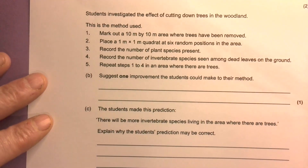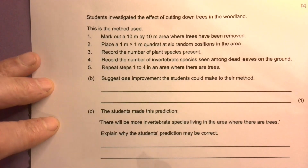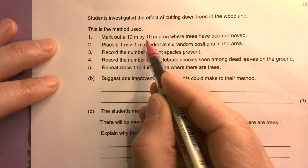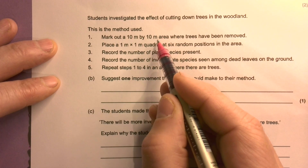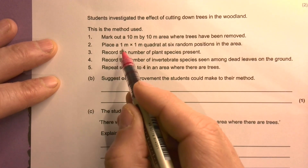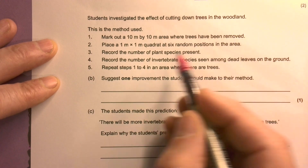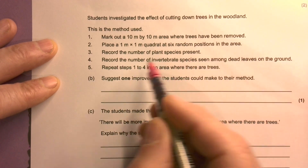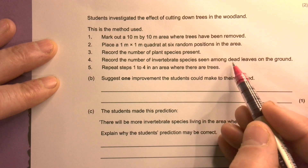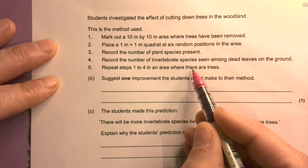Students investigated the effect of cutting down trees in woodland. This is the method used: they mark out a 10 by 10 meter area where trees have been removed, place a 1 meter by 1 meter quadrat at six random positions in the area, record the number of plant species present, record the number of invertebrate species seen on dead leaves on the ground, then repeat in an area where there are trees.